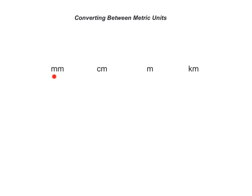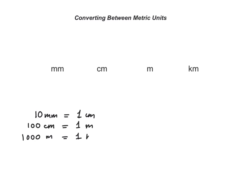Here we have some metric units of length: millimetres, centimetres, metres and kilometres. You need to memorise that 10 millimetres make 1 centimetre, 100 centimetres make 1 metre, and 1000 metres make 1 kilometre. You have to memorise these equivalents.